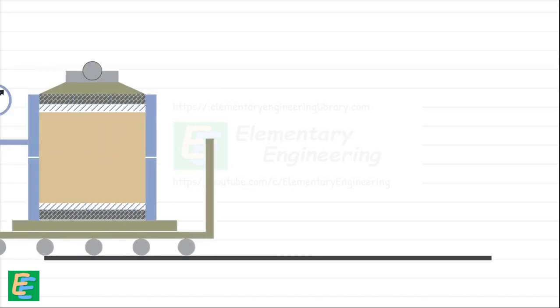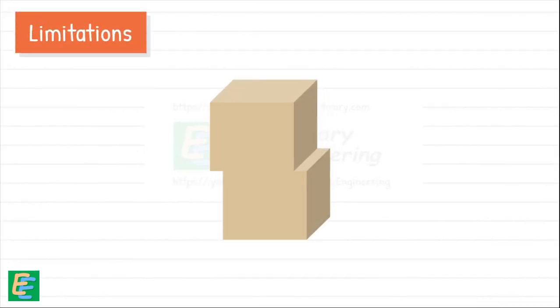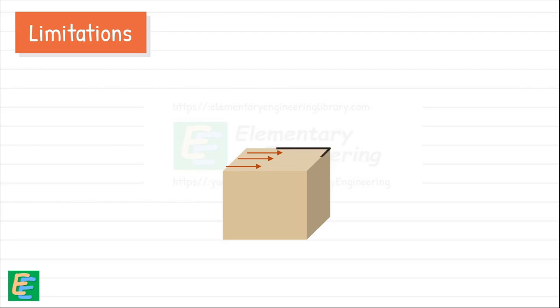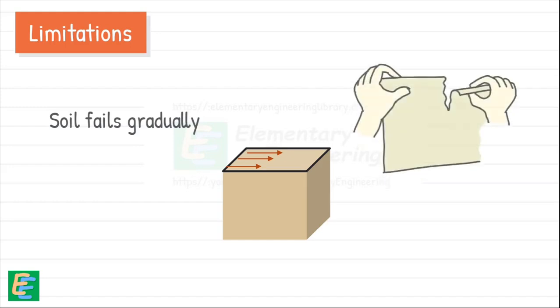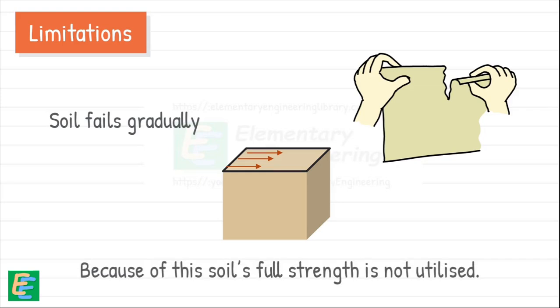The direct shear test is very easy to perform; however, it does have some limitations. One is that when the sample is sheared, stress is not evenly distributed across the failure plane — stresses are higher around the edges. This can cause the soil to fail gradually, almost like how a piece of paper tears, meaning the soil's full strength is not fully utilized all at once across the entire failure plane.